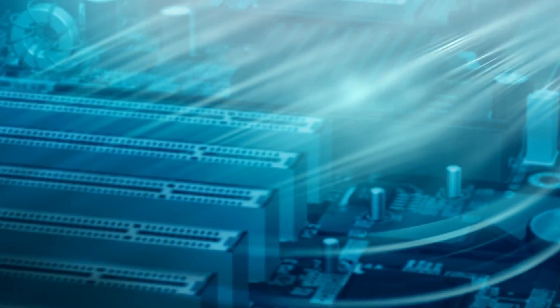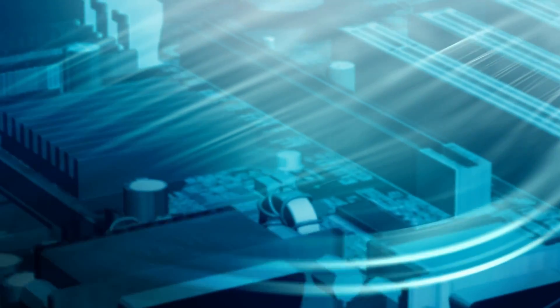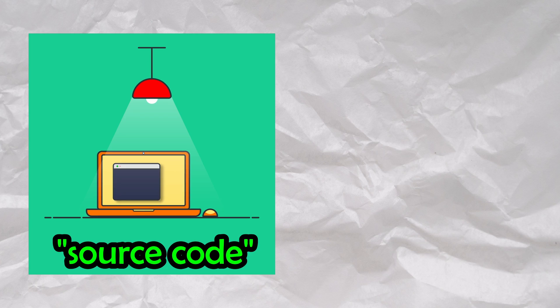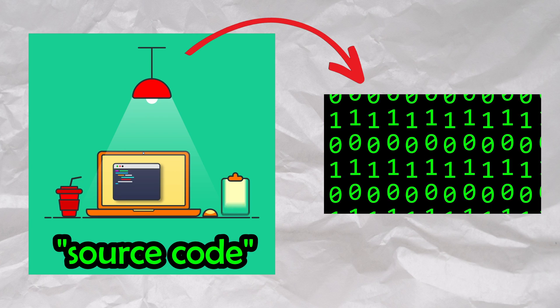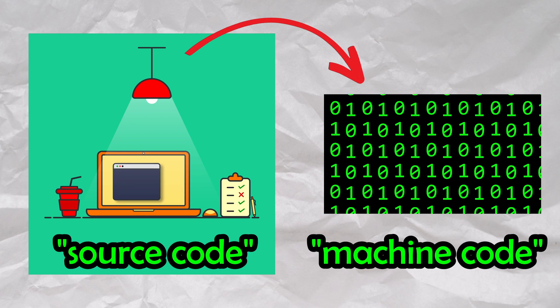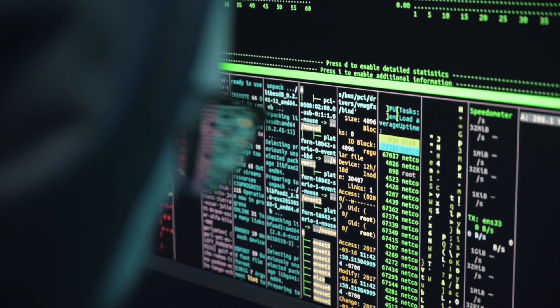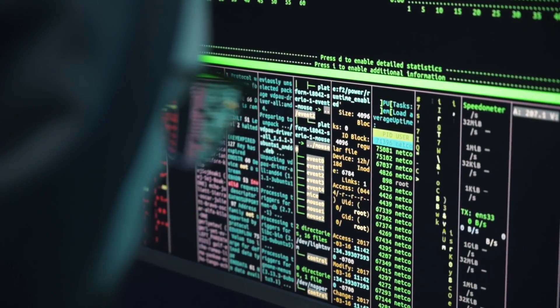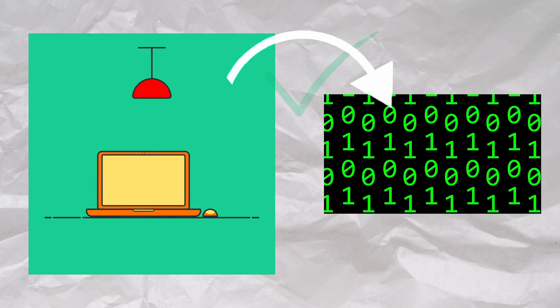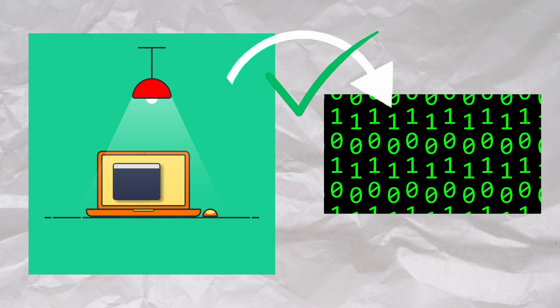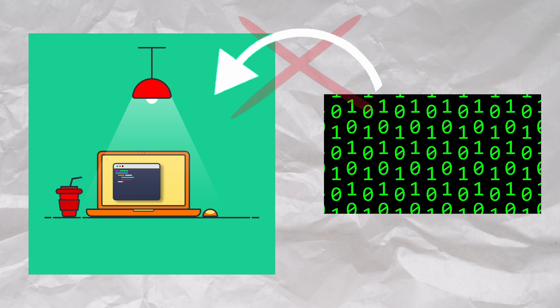When you write code in a compiled language such as C, before you can run it, you must go through the step of compilation, which converts your human-readable source code into highly optimized, hardware-specific, ready-to-execute machine code, also known as binary. This is why there are hardware-specific downloads when downloading various software, and how organizations are able to distribute software without leaking their source code. A compiler can convert from source code to machine code, but reversing this is quite difficult.